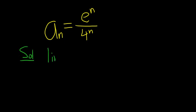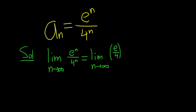We'll start by taking the limit as n approaches infinity. And we have e to the n over 4 to the n. You'll notice everything is being raised to the nth power, so it's a good idea to write this as follows: the limit as n goes to infinity of e over 4 to the n.